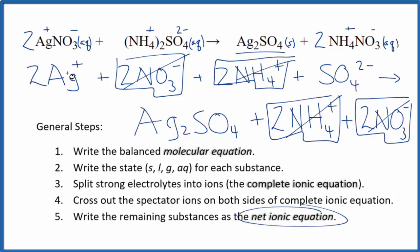What's left, that's the net ionic equation for AgNO3 plus (NH4)2SO4. I'll clean this up, write the states in. We'll have our net ionic equation.